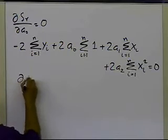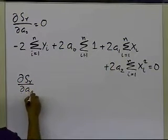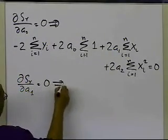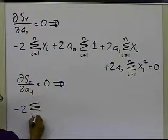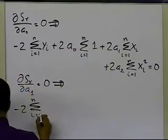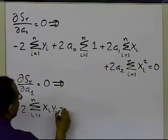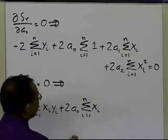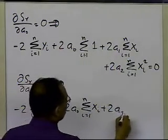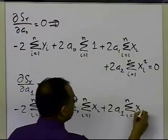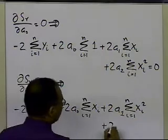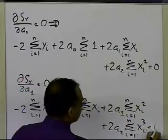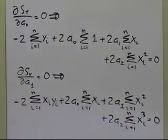You'll have to refer to what I have done earlier to be able to look at that. This one implies minus 2 summation i equals 1 to n of xi times yi, plus 2 a0 summation i equals 1 to n of xi, plus 2 a1 summation i equals 1 to n of xi squared, plus 2 a2 summation i equals 1 to n of xi cubed equal to 0. That's what I'm going to get from the second equation.